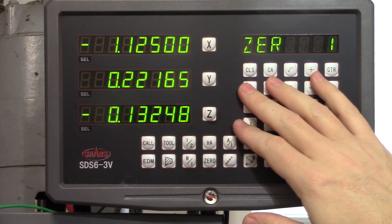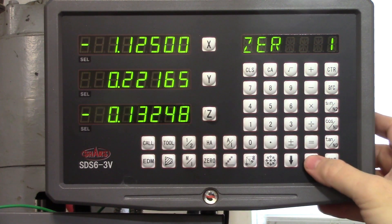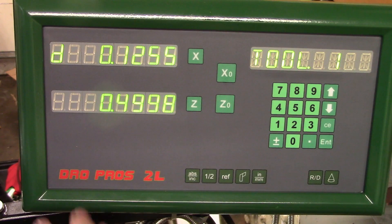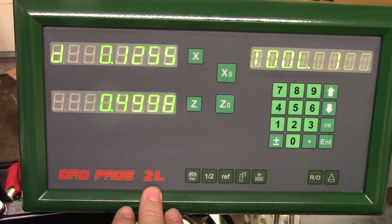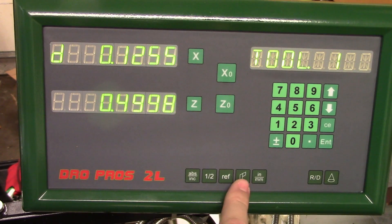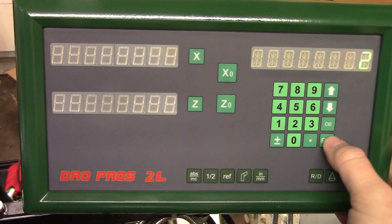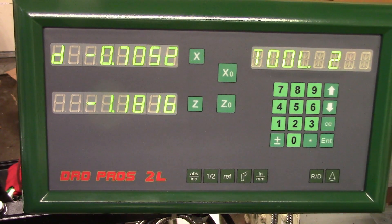On my mill DRO from Sino, it's just a matter of cycling through them using the arrow keys. On my lathe DRO from DRO Pros, I have to push this button that looks like a cutting tool, and then type in the tool number and press enter. No matter how it's done, it's not a bad idea to label the tool holders with their offset numbers so you can keep track of them during the job.